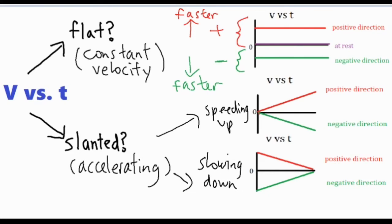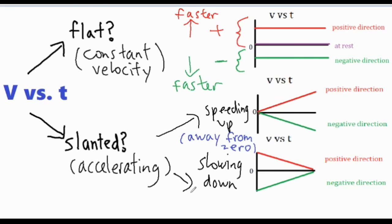A natural mistake many people make is thinking that a positive slope means something is speeding up and a negative slope means it's slowing down — but they follow a different rule. If you look at both graphs that show speeding up, one is speeding up in the positive direction because it's above the x-axis, and the other is below. The similarity between the two is that they're both slanting away from zero. So the rule is: if the line is moving away from zero, the value is getting progressively larger, meaning the object is speeding up.